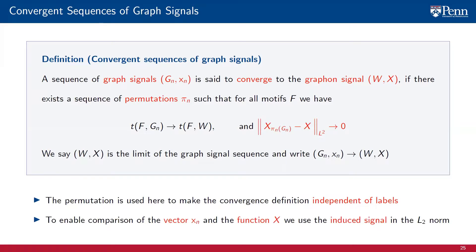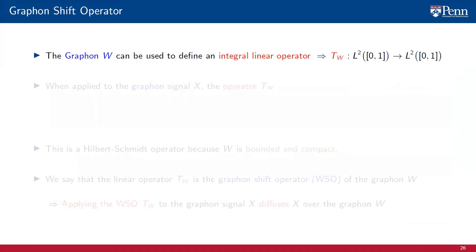Further note that our goal is to compare the vector x_n with the function X. This is an apples to oranges comparison that we resolved with the use of the induced graphon signal. We do not compare the vector x_n with X. Rather, we compare the function X_{π_n}(G_n) induced by x_n. This is an apples to apples comparison. We compare two functions.